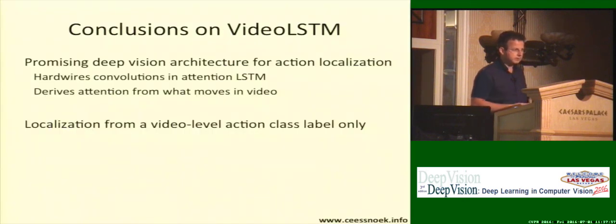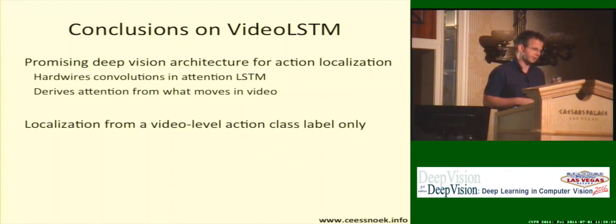That concludes the VideoLSTM. While we believe it's a promising deep vision architecture for action localization in video, it is achieved by hardwiring convolutions inside the attention LSTM architecture. It derives the attention not from the appearance, but rather from what moves in the video. Localization then becomes possible by only using an action class label. You can, in principle, do localization on any video dataset. You are no longer dependent on small scale datasets for which the bounding box frames are provided. And with that, I would like to thank you for your attention.